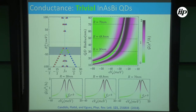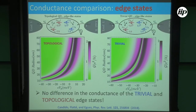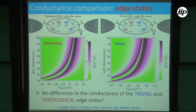Then we do the same thing for the four levels of the trivial dot — exactly the same thing — and you get no surprise: something very similar. I can make the same cuts as before, same story, goes up to 2e²/h. So even though the edge states in the topological dot are non-trivial and those in the trivial dot are trivial, it's the same physics. If you have a black box with a dot inside, attach it to leads, and measure the conductance, you won't be able to say which one is topological. They both look like they have edge states — they both look topological. That was unusual.